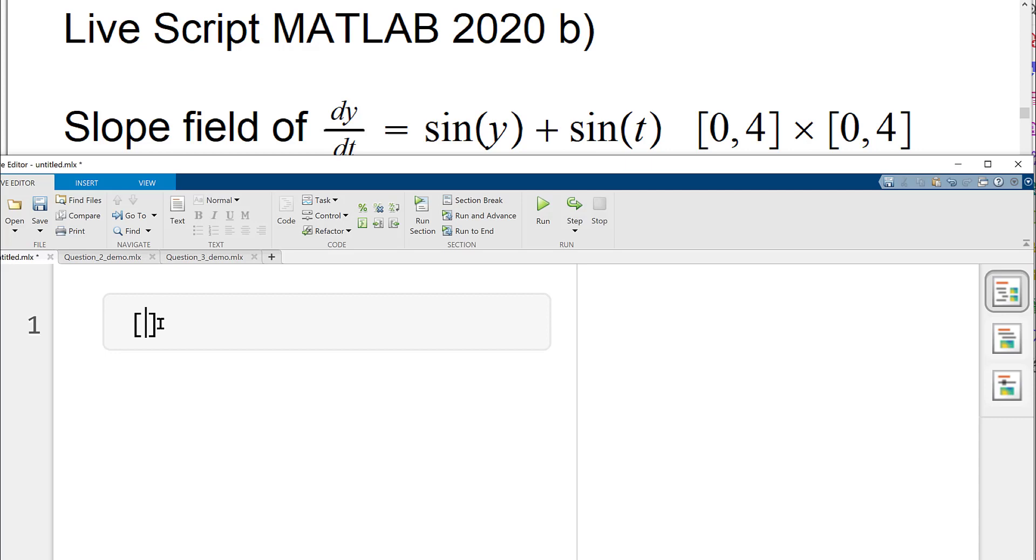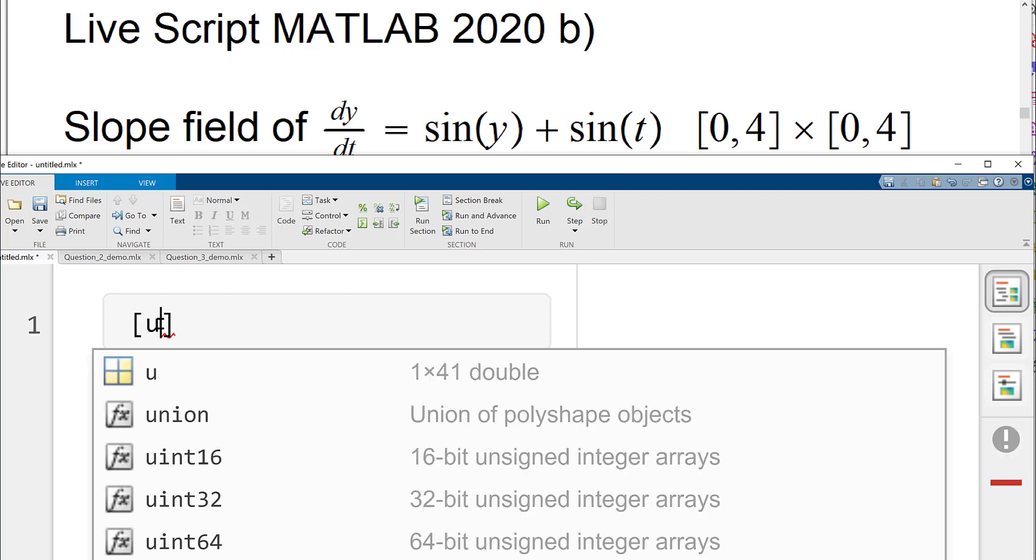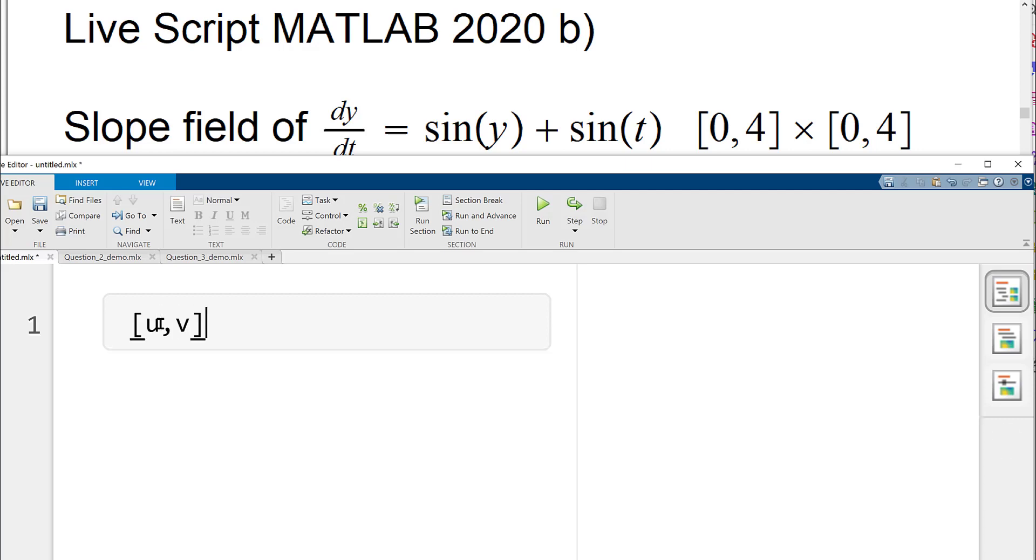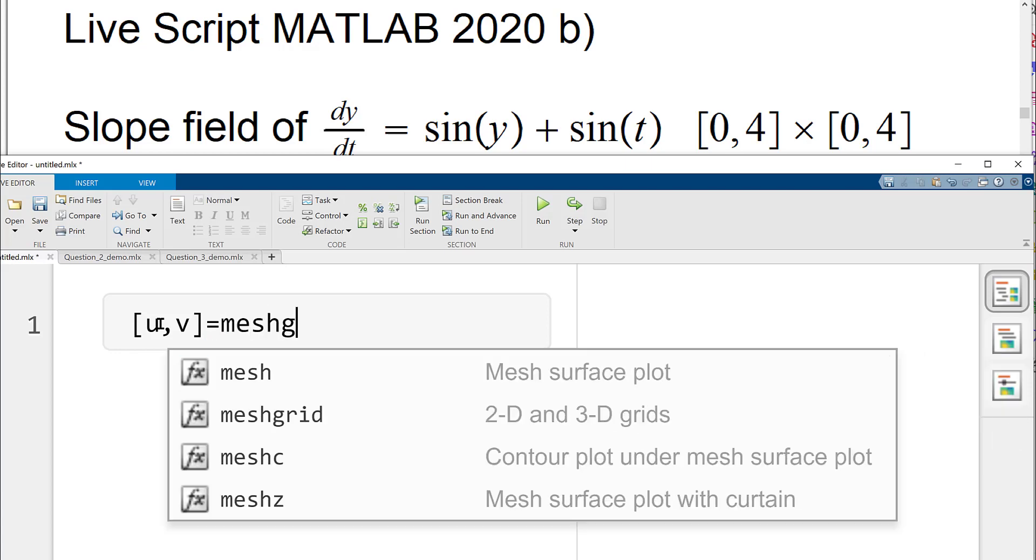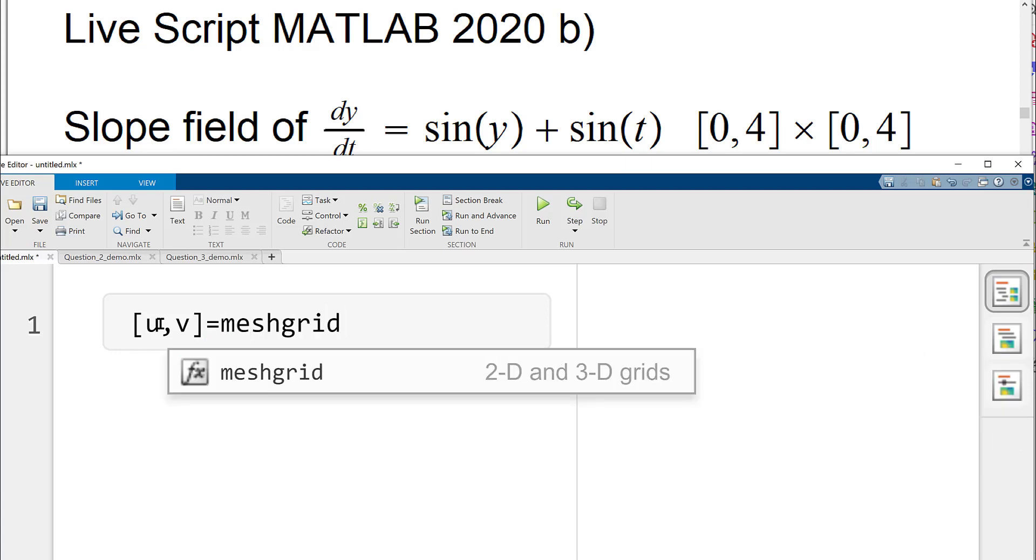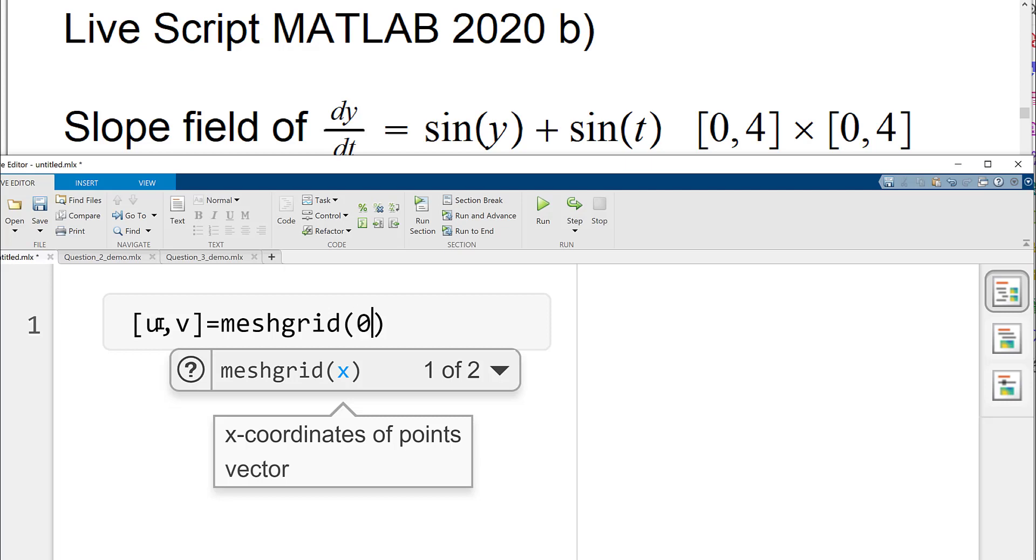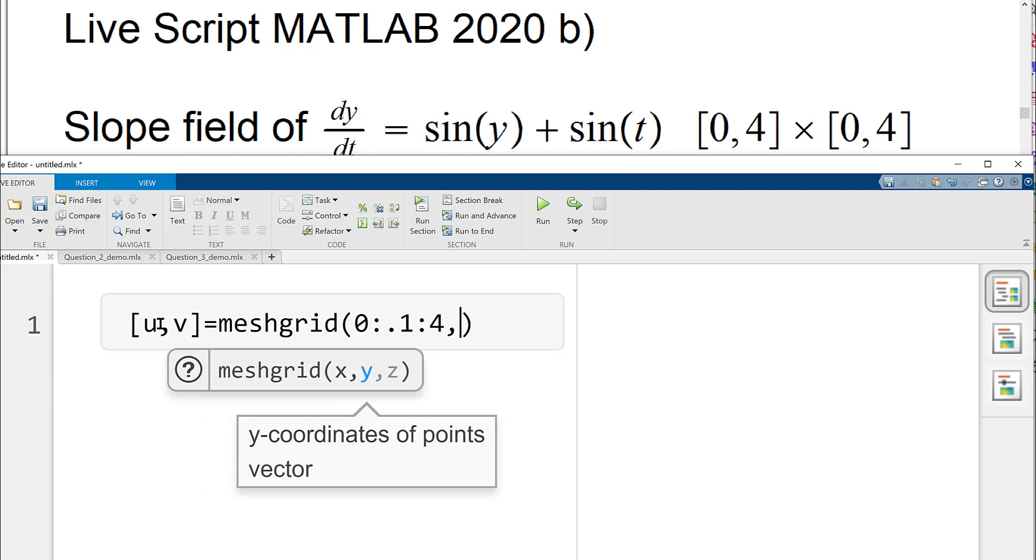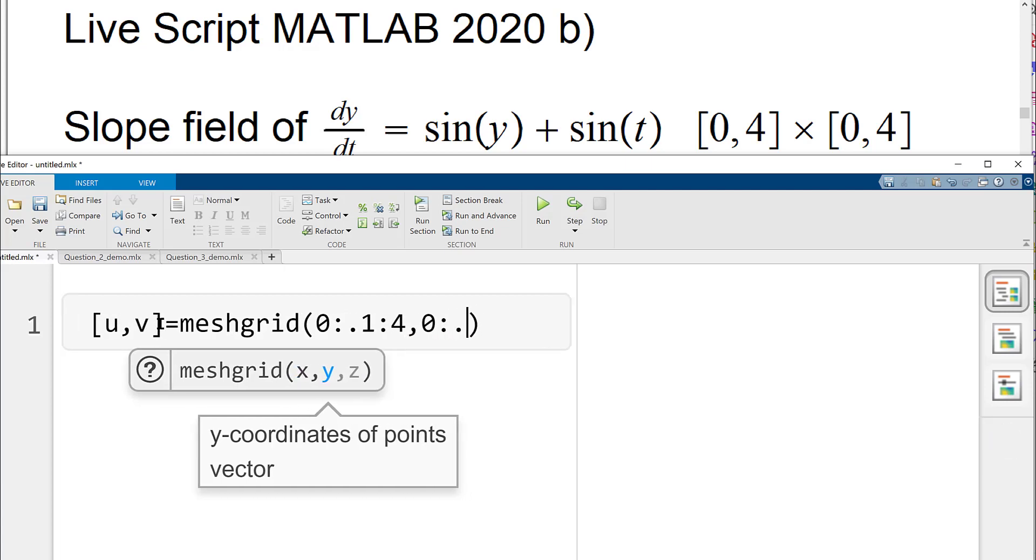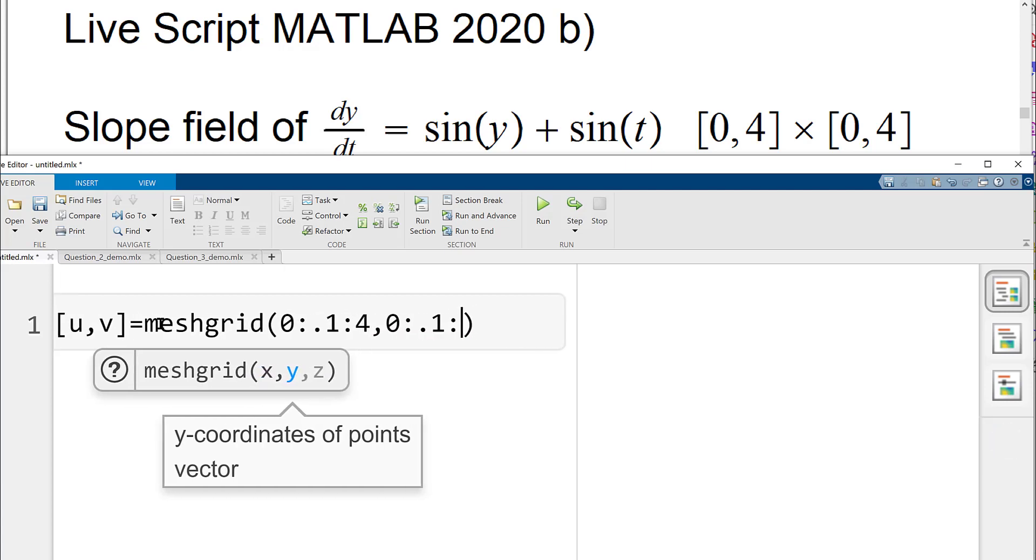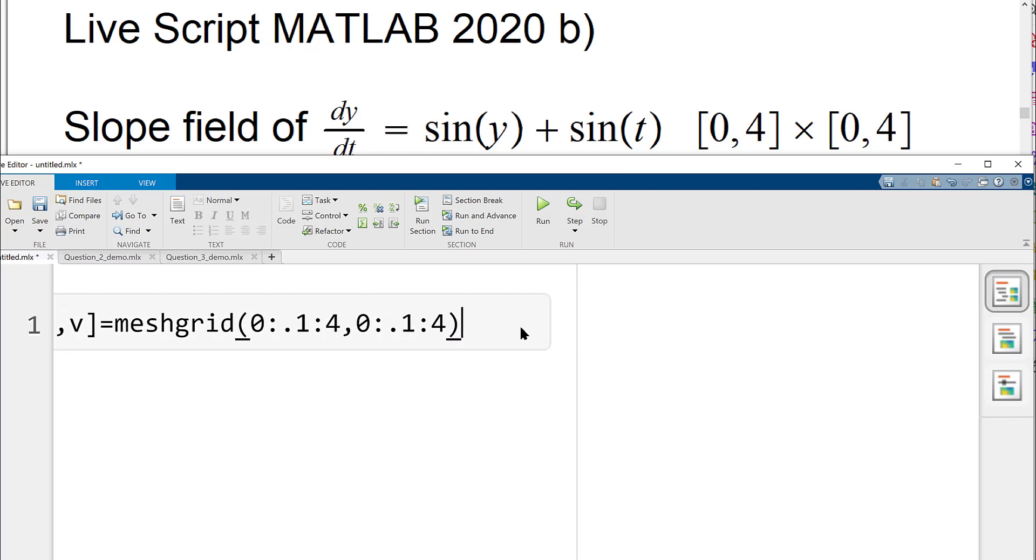So first what I would do is that I shall create a mesh grid for the plotting points. So mesh grid, and we want, we'll go in the steps of 0.1 to go from 0 to 4 in both the directions. So here we go and put this semicolon at the end so that it doesn't give us the whole output.